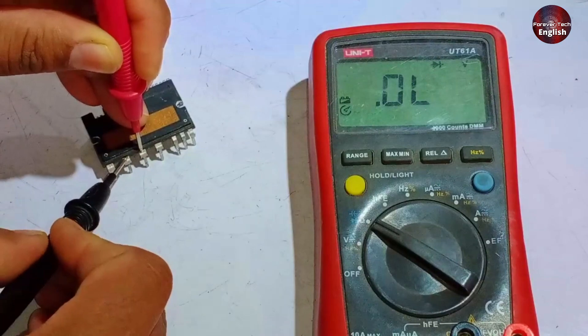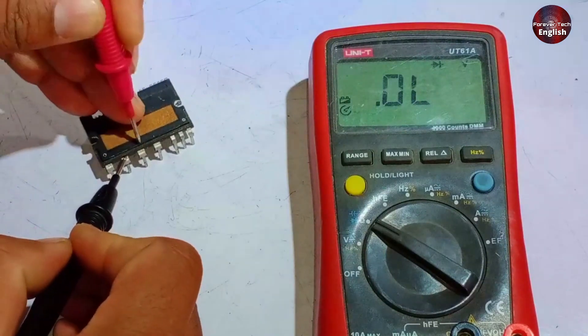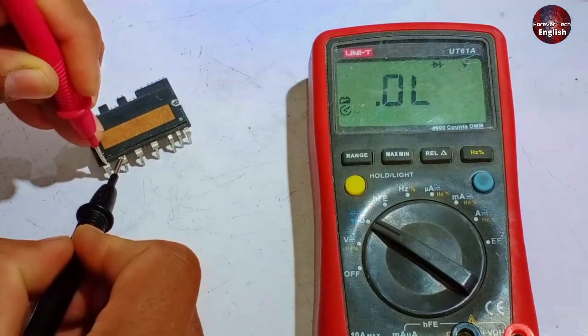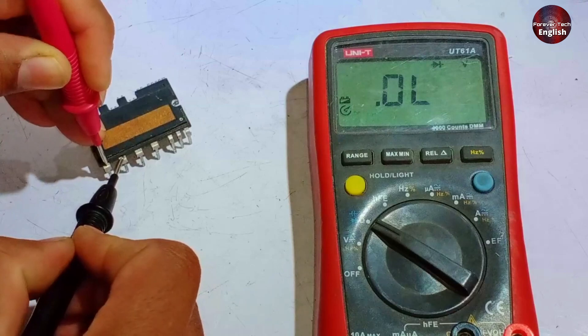When we check pin 25, no value should appear there either. Similarly, no value should appear on pin 27. This is how you can test it.